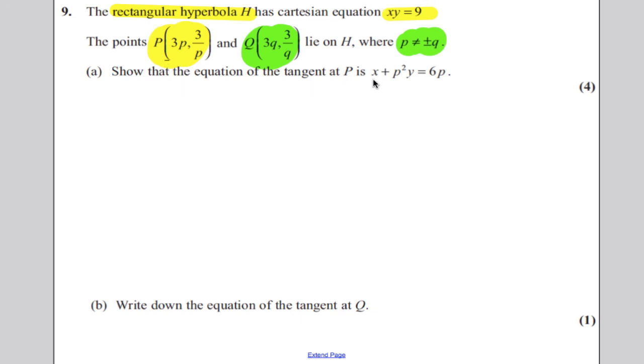So we're asked to show the equation of the tangent at P is x + p²y = 6p. Now firstly, I always draw a picture of these. Let's just draw a small picture up here. Now we know that a rectangular hyperbola looks something like this.